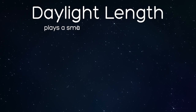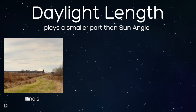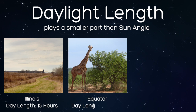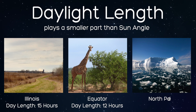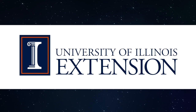Daylight length plays a much smaller part in seasonal change as compared to Sun angle. During our summer, we get more hours of daylight than at the equator, but the equator is still warmer because Sun angle is higher there. The poles have 24 hours of daylight for six months of the year, but they are still cold during that time. That's because the Sun never gets high in the sky at the poles.